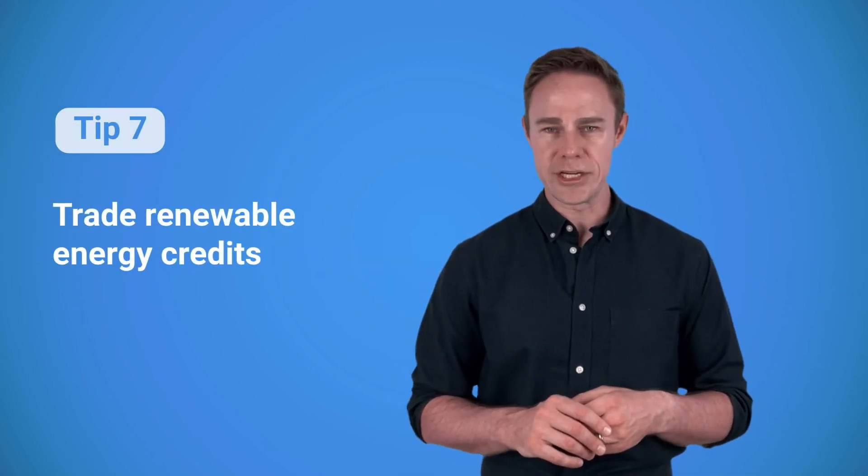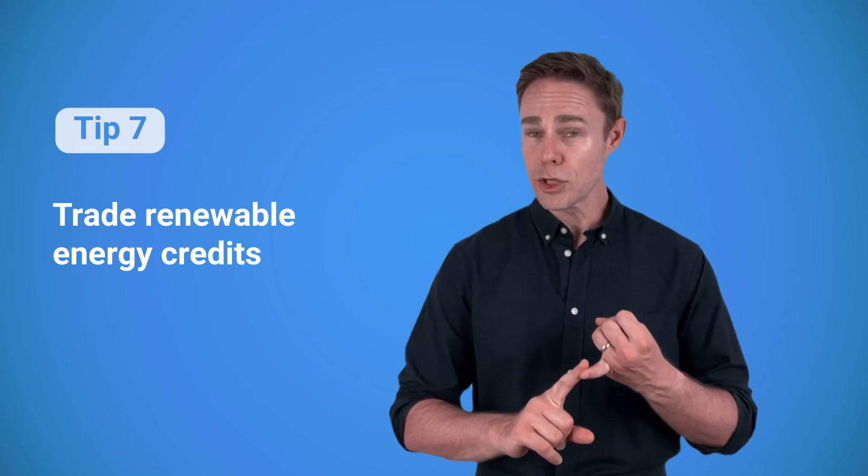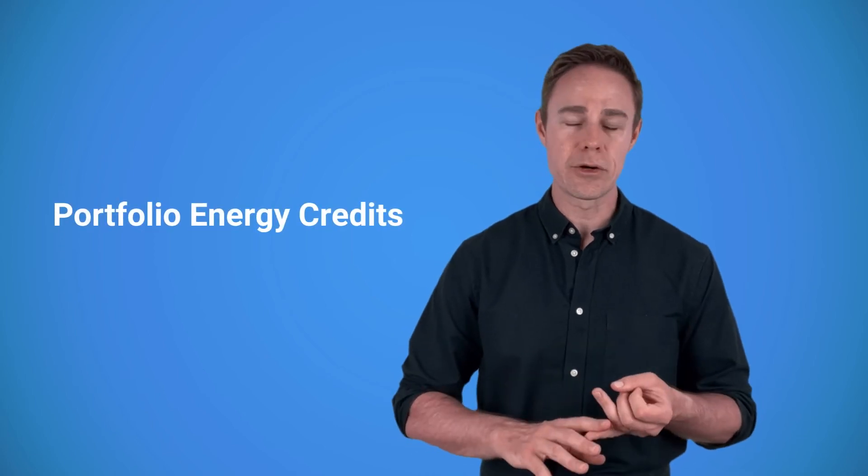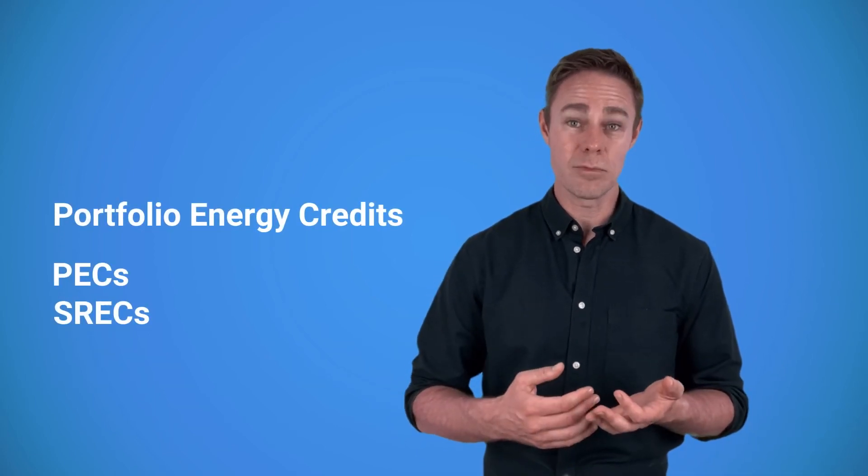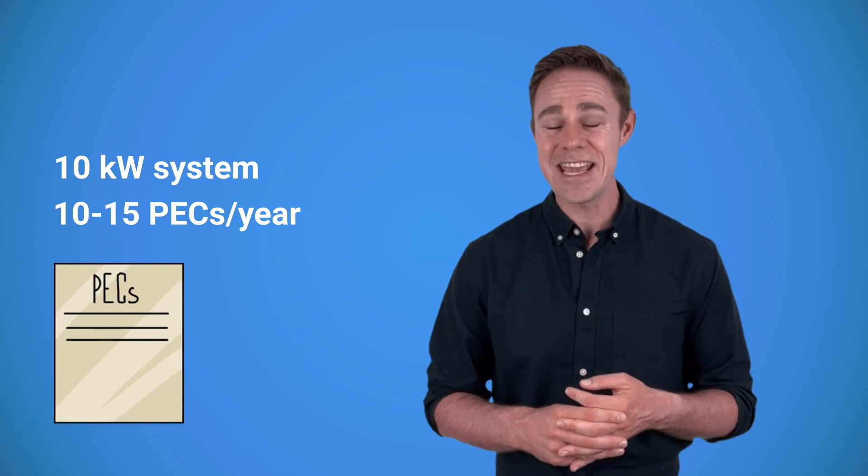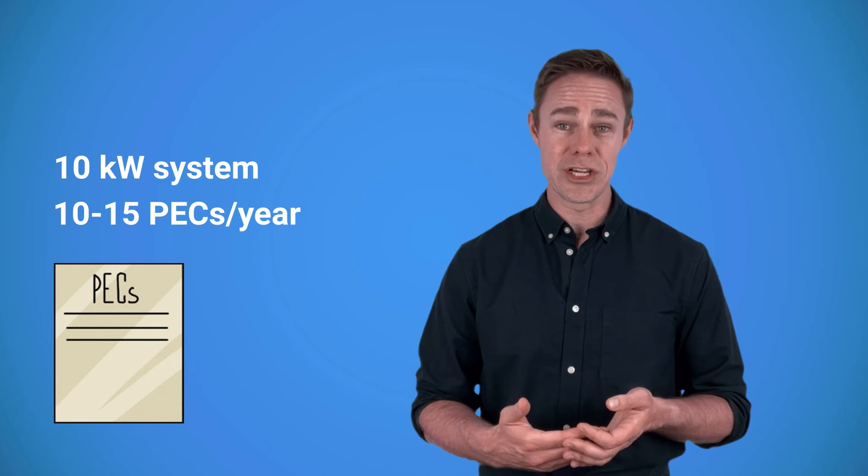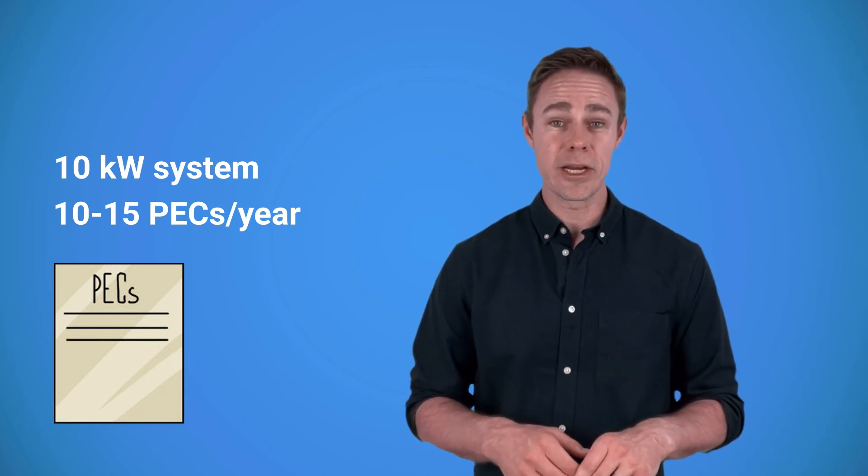Tip number seven. See if you can trade renewable energy credits. Solar systems generate not only clean electricity, but also so-called portfolio energy credits, PECs, also known as SRECs for a certain amount of generated clean energy. A owner of a 10 kilowatt system can make 10 to 15 packs a year. The pack in itself represents the progress that America makes towards its clean energy goals, and you can sell these energy credits on special online platforms. Your buyers will be utilities and companies which need the credits to meet these goals set by the government.